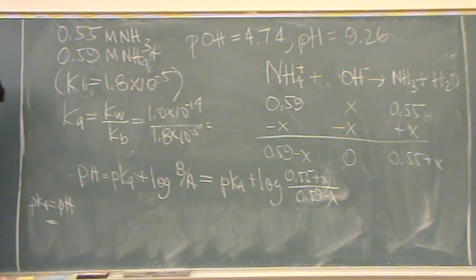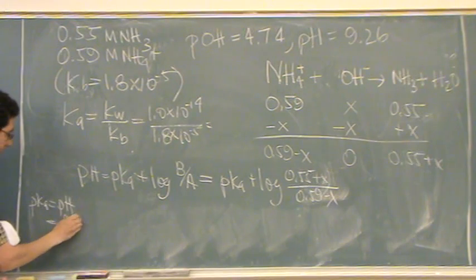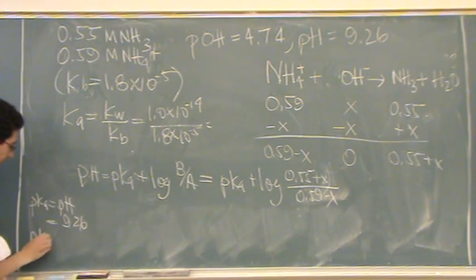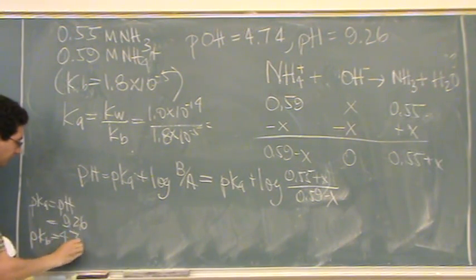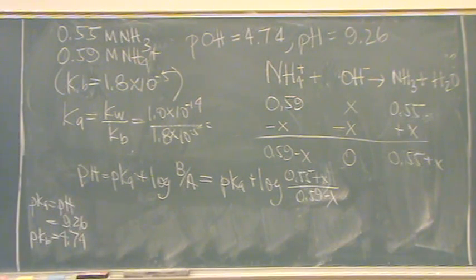The PKA, and this should be from the table here. Let's see if ammonia... I have the PKA is 9.26, and the PKB is 4.74. So I know from seeing the problem, oh, I've arrived at the midpoint.